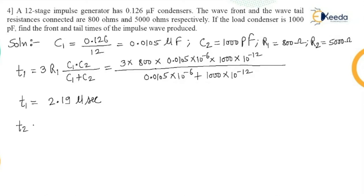You have to use calculator for doing the calculation. The formula for T2, it is equal to 800 plus 5000. So I just directly write it down as 5800 multiplied by, so by using calculator I get the value for T2 as 46.7 microsecond.